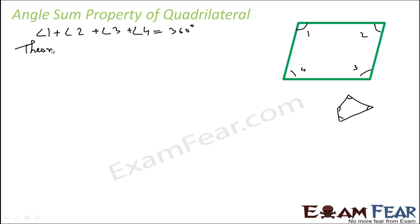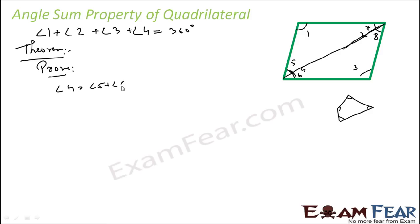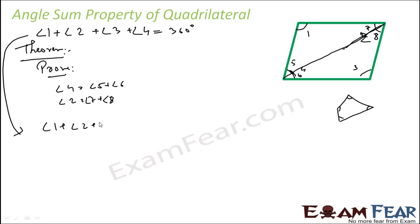This is a theorem, so we have to prove it. Proving this is pretty easy — you just draw one diagonal. Now angle four is broken into angle five and angle six, and angle two is broken into angle seven and angle eight. So angle four equals angle five plus angle six, and angle two equals angle seven plus angle eight. We have to prove that angle one plus angle two plus angle three plus angle four equals 360 degrees.